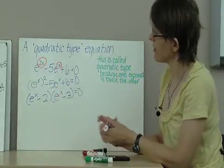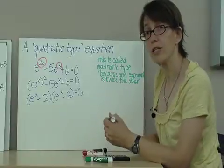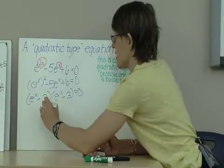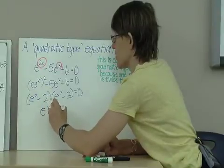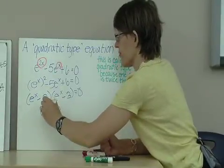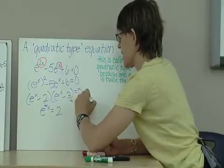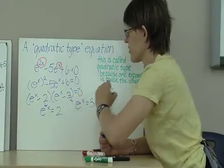And so, I'll solve each of these equations separately, setting them each equal to 0. I have e to the x equals 2 from the first equation. And from the second equation, I get e to the x equals 3.